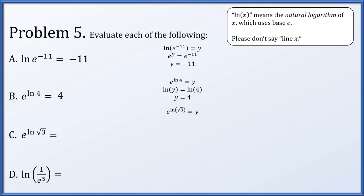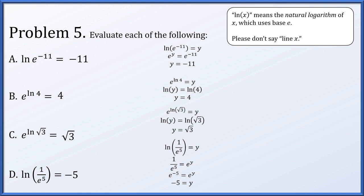For part c, we set e to the natural log of root 3 equal to y, convert to a logarithm: the log base e of y equals log of root 3, so y equals root 3. For part d, the natural log of 1 over e to the 5th equals y. Converting to an exponential: 1 over e to the 5th equals e to the y, meaning e to the minus 5 equals e to the y, so y equals minus 5.